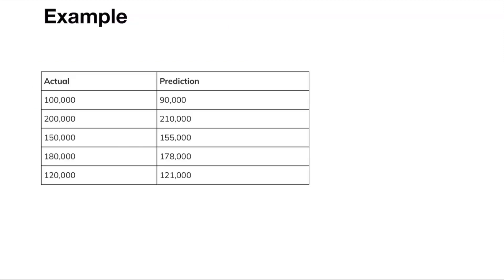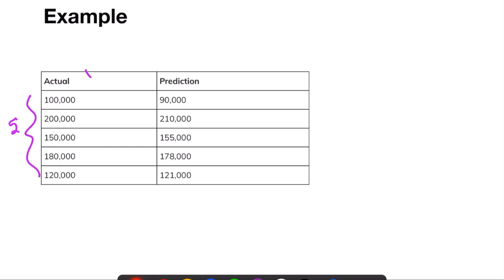Now let us look at an example. Consider five data samples — these are actual values and these are model predictions. If I want to calculate the loss values, I need to calculate them between each and every example.